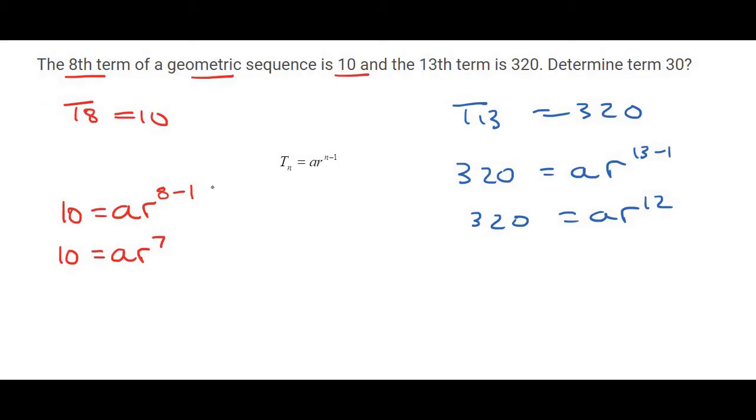And so there's various ways you could do this. What I'm going to do is I'm going to take this equation over here, and I'm going to get A alone. And so A would be equal to 10 over R7.